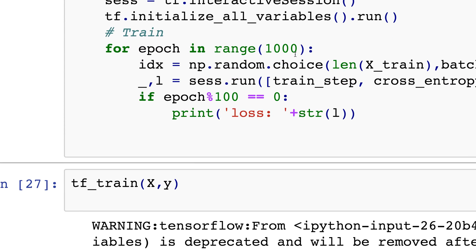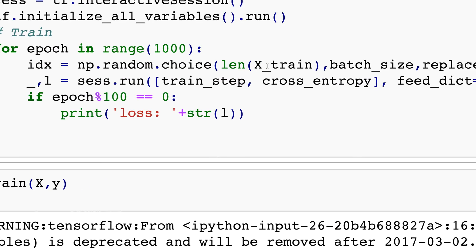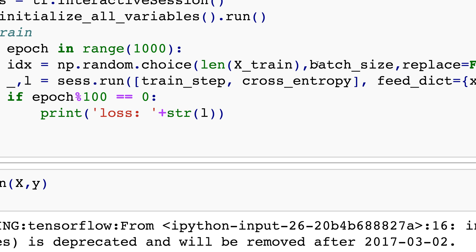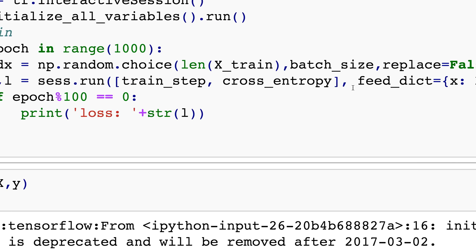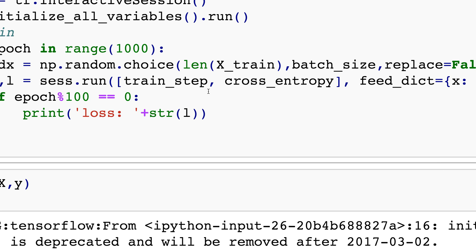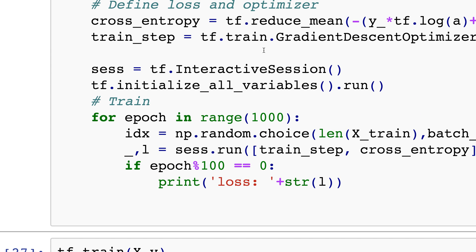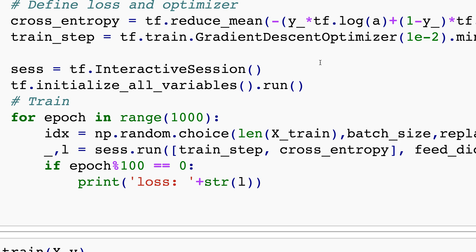So I'm going to be randomly choosing a batch size, in this case 20 of them randomly, and I'm going to be running saying session dot run train step. So train step over here is the gradient descent part.